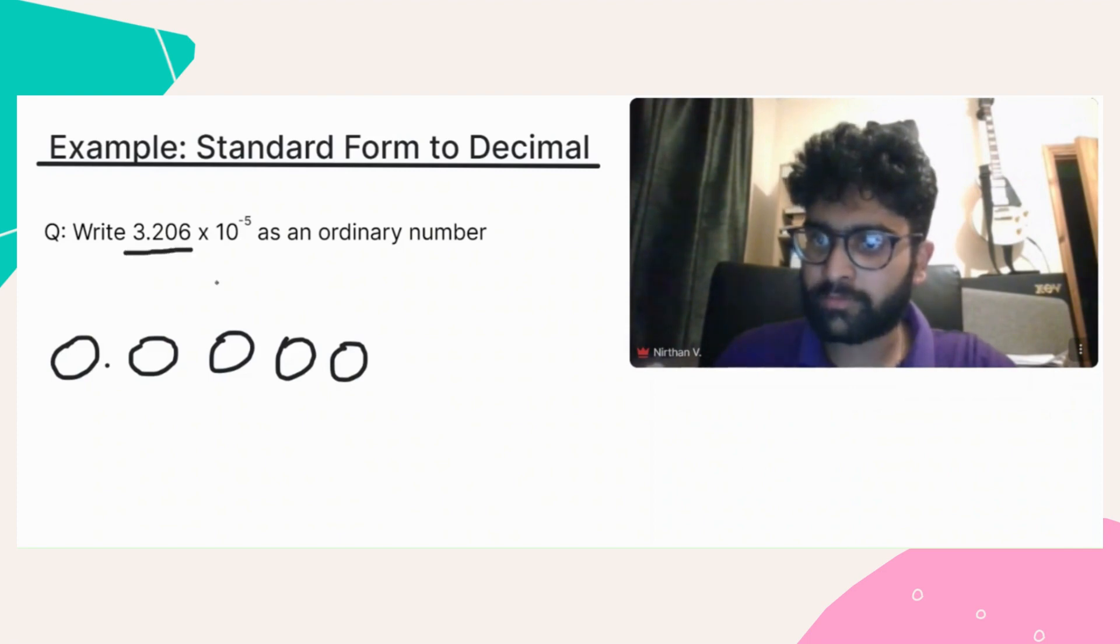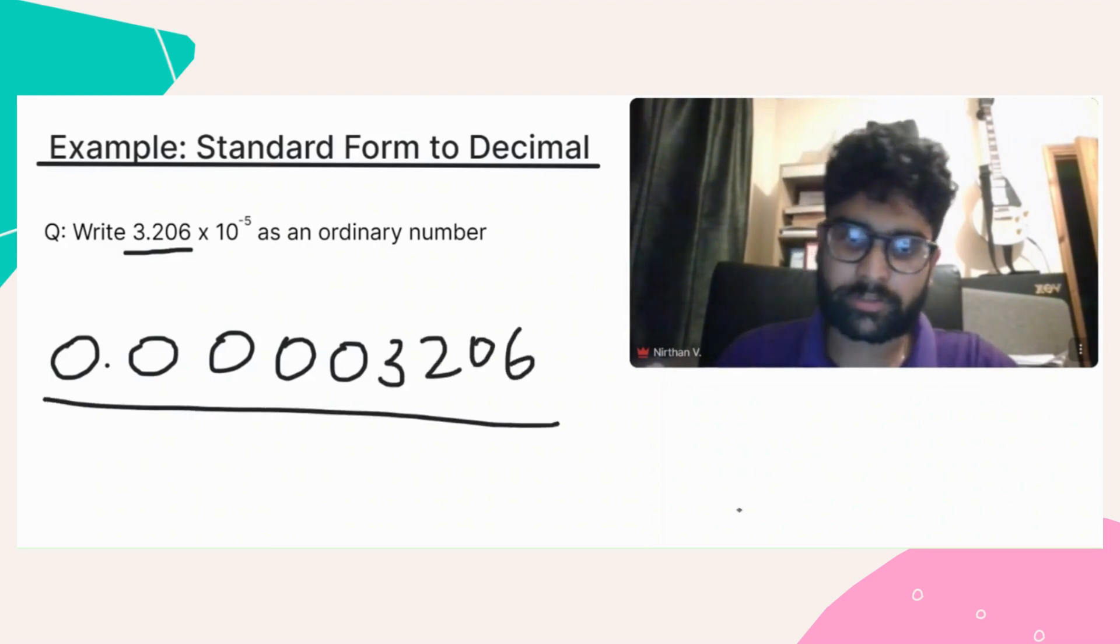Then we look at the number in front of the times 10, and we write that down after, but without the decimal point, like so. So 3.206. And that's our answer.